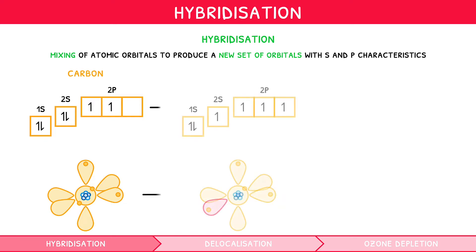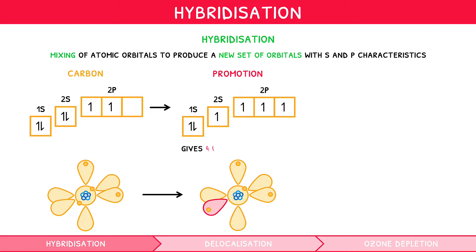First, promotion occurs, which involves the movement of an electron from carbon's 2s orbital to its unoccupied 2p orbital. This gives 4 unpaired electrons, enabling bonding.